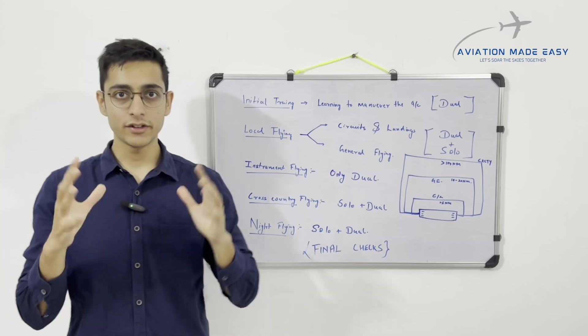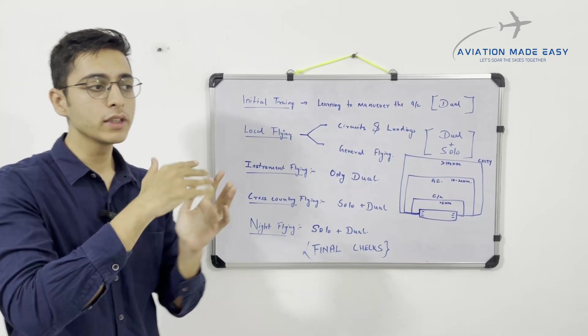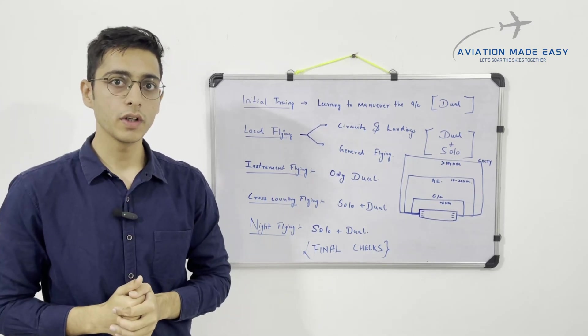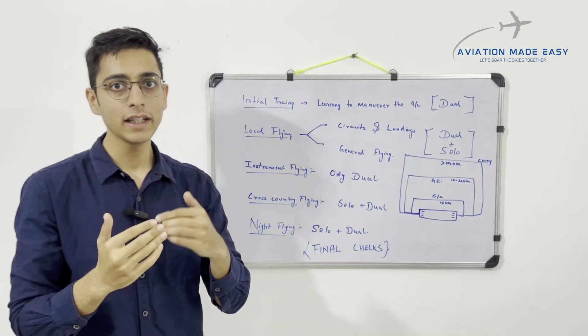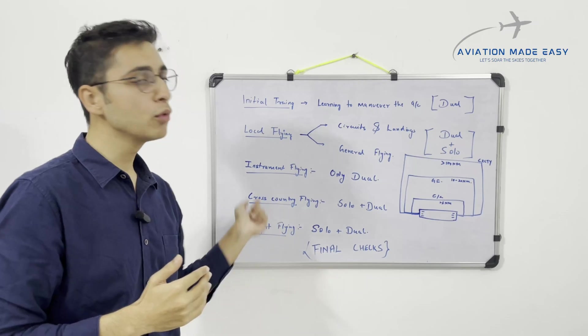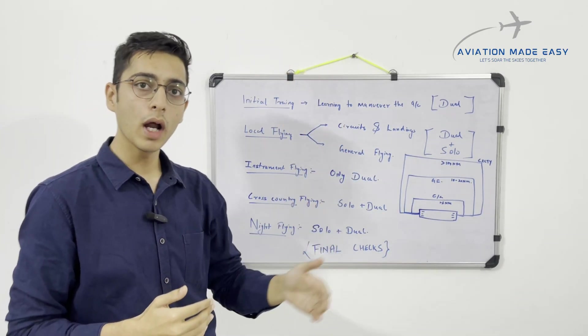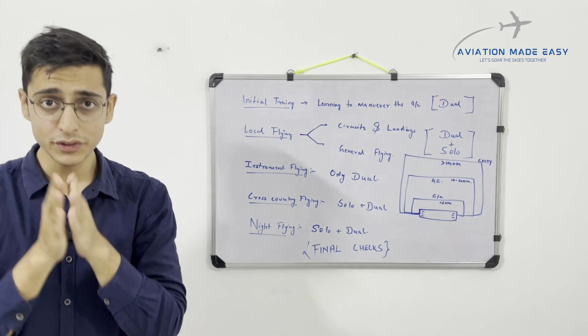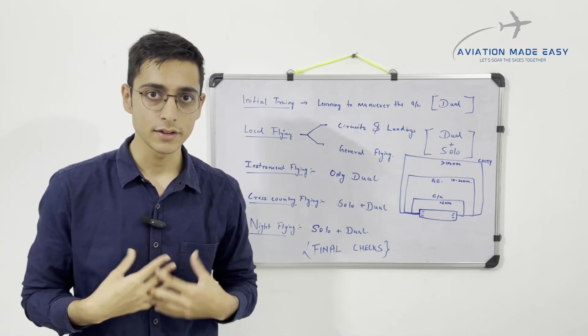Now we move towards the bifurcation of 200 hours and how flying training actually happens. Before getting into the bifurcation, we need to understand the different kinds of flying that are done, and then we'll understand how we complete all the different requirements of 200 hours prescribed by DGCA for a commercial pilot license.